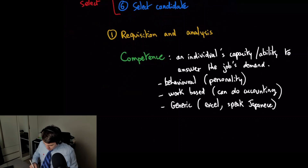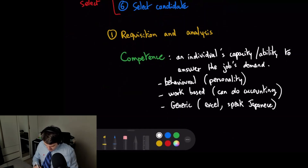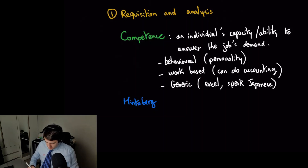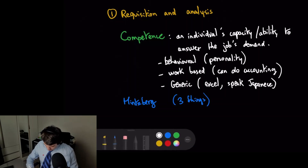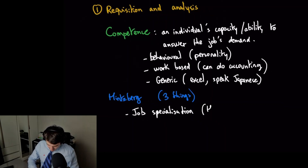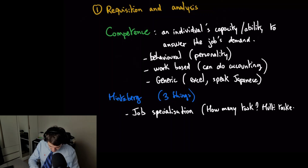Mintzberg — remember Mintzberg — he was looking at it in a different way. He was saying that there should be three parameters of job design. The first is job specialization, which is simply how many tasks does the job need, multitasking capabilities, things like this.